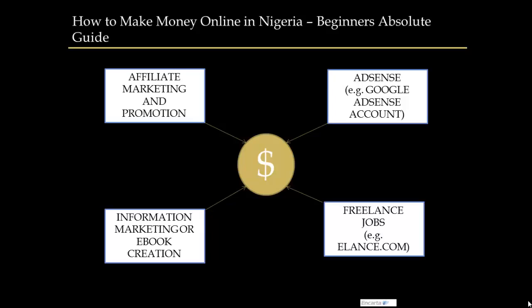The next one, and the most common reliable one, is AdSense — Google AdSense. You open a Google AdSense account, and as soon as you get approved, you are sure of getting massive passive earnings. That is a passive way to access the dollars we're talking about here.